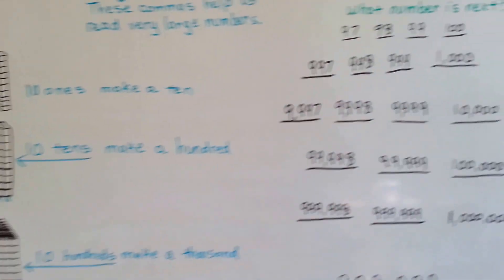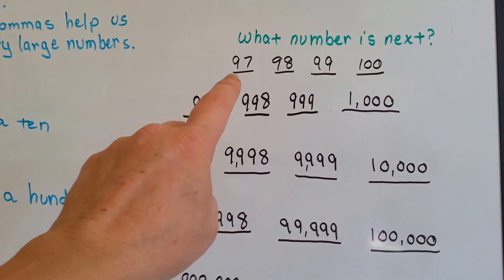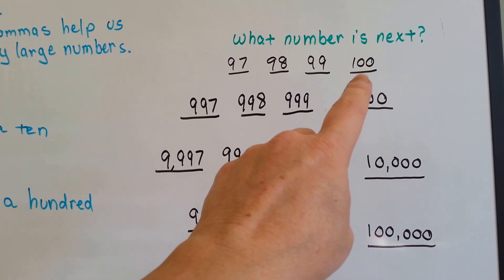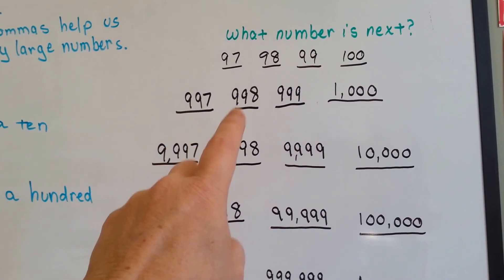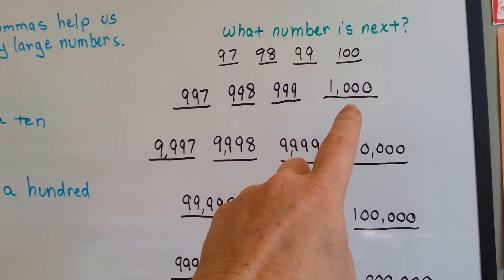So let's take a look at what number comes next. When we're counting and we say 97, 98, 99, the next number is 100. When we're counting and we say 997, 998, 999, the next number is 1,000.